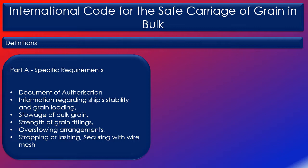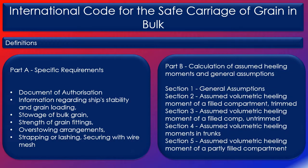Part B contains calculation of assumed heeling moments in five main sections. Section 1 is general assumptions. Section 2 covers assumed volumetric heeling moments of a filled compartment which is trimmed. Section 3 is assumed volumetric heeling moments of a filled compartment which is untrimmed. Section 4 contains assumed volumetric heeling moments in trunks. Section 5 covers assumed volumetric heeling moments of a partially filled compartment.